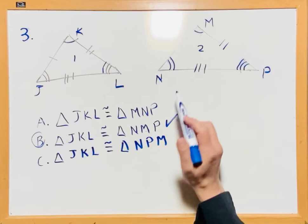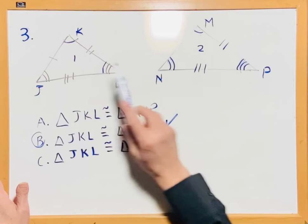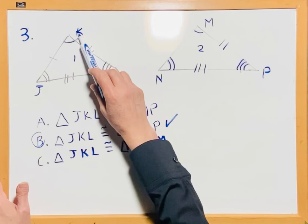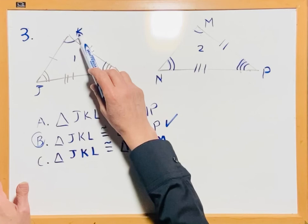I repeat again. Because the second has J, K, L, and the corresponding angle for J is N, the corresponding angle for K is M, and the corresponding angle for L is P. So triangle JKL is congruent to triangle NPM.